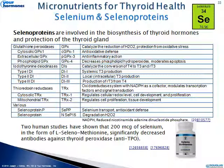One micronutrient very important for thyroid health is selenium. Selenium is required for a number of selenoproteins needed for proper thyroid health, including the iodothyronine deiodinases types 1, 2, and 3. Human studies have found that giving 200 micrograms of selenomethionine will significantly decrease antibodies against thyroperoxidase, seeming to stabilize thyroid function by stabilizing enzymes. The numbered references on the slides are hyperlinks in the original PowerPoint — you can pause the video, write down those numbers, go to pubmed.gov, and download those papers yourself.